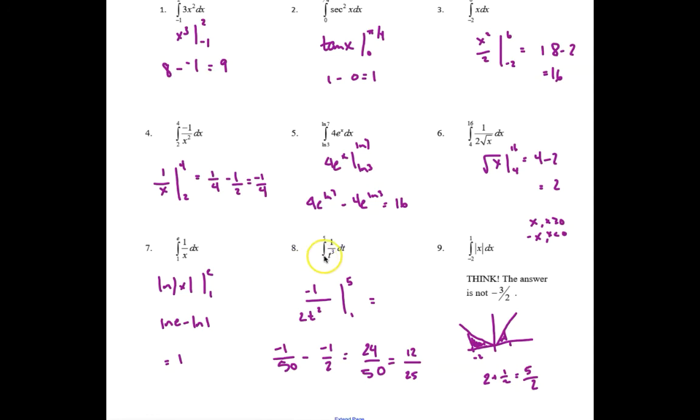For number 8, when we integrate 1 over t cubed, we go up a degree to a negative 2 as our degree, and we divide by the negative 2. So we get negative 1 over 2t squared. And when we evaluate that first at 5, we get negative 1 50th. And then we subtract out evaluating at 1, which is negative 1 half. So negative 1 50th minus a negative 1 half gets us 24 50ths, which simplifies to 12 25ths.